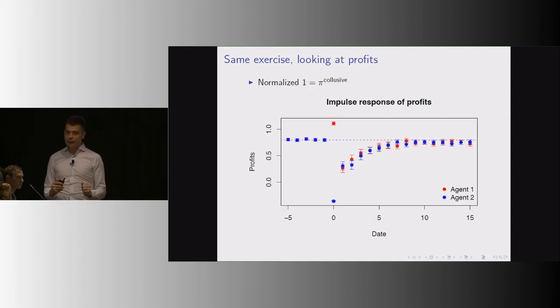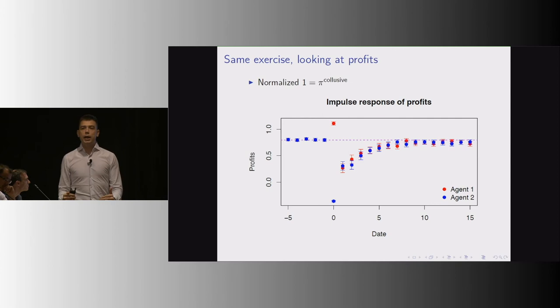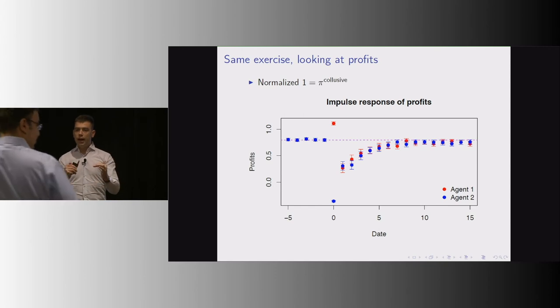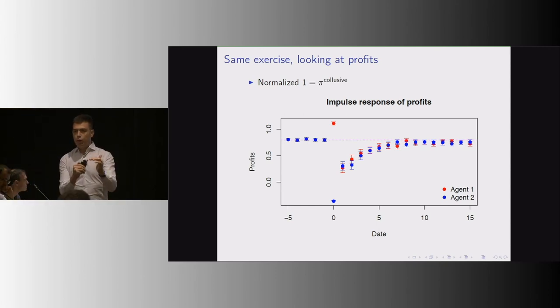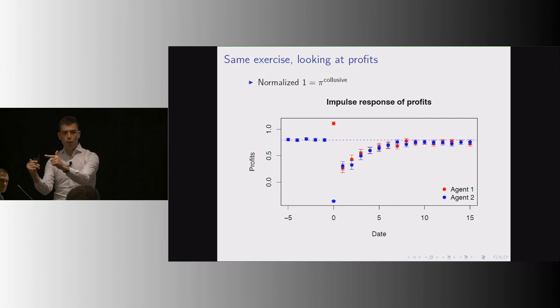Three comments, and I'm done on these last slides. The first comment is that these are fairly sophisticated strategies for these algorithms to learn. You have to learn to punish, to sacrifice short-term gains for the long-term benefit of restoring the cooperative relationship. You also have to learn to move from the punishing phase to the cooperative phase.